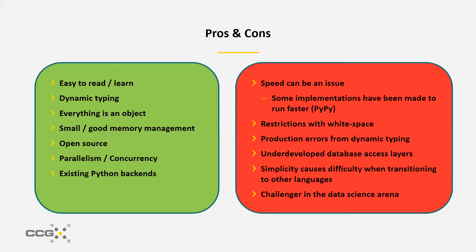Python uses indentation or white space instead of the curly brackets or parentheses you see in other languages. It makes code easier to read, but introduces some restrictions on how you can customize functionality. And because of dynamic typing, variables assume their type when data is assigned — this can cause errors when pushing code to production if it encounters unexpected data types. Also, although there are packages for accessing databases from Python code, they are far from perfect and there's a lot of room for improvement in that area.